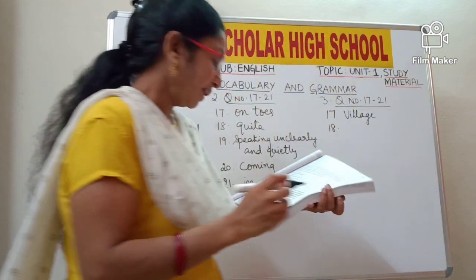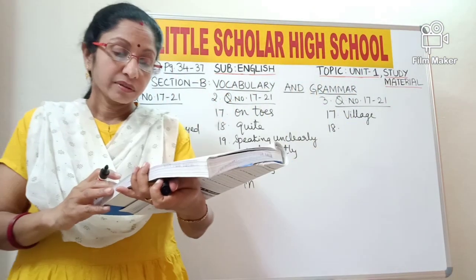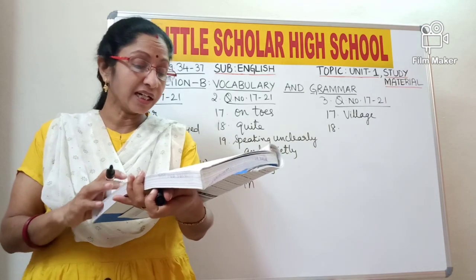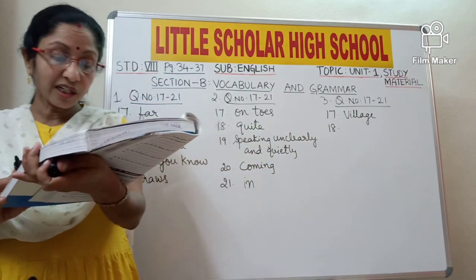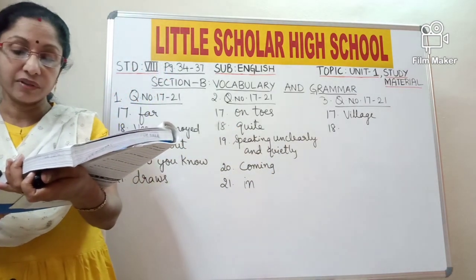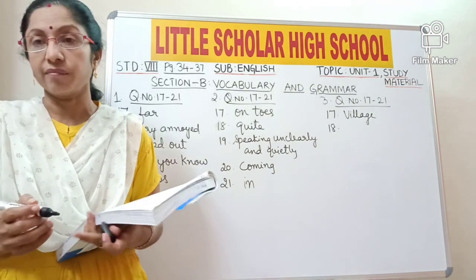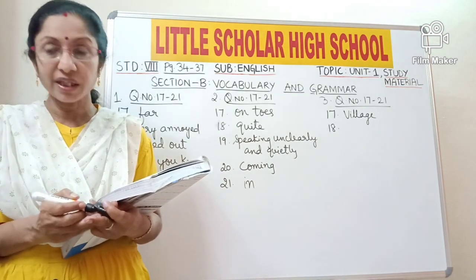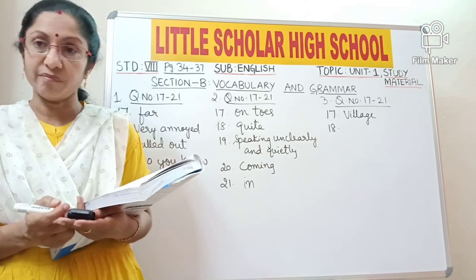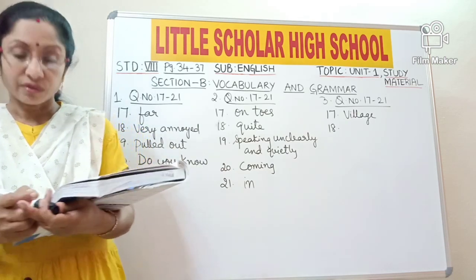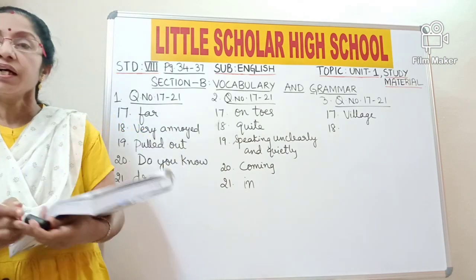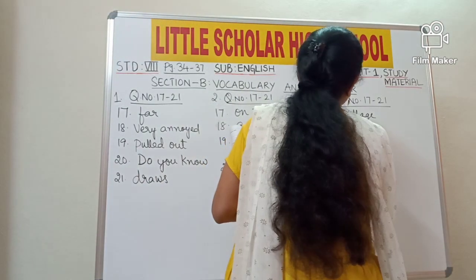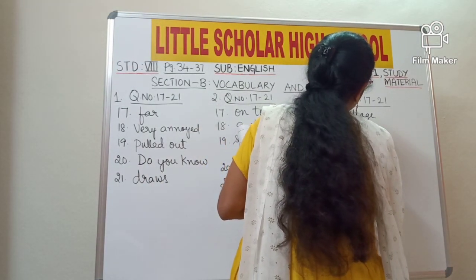Question number 18: 'futile' is underlined — futile attempt. Write the synonym of the underlined word 'futile'. A synonym is a word which has similar or almost the same meaning. The synonym of 'futile' is 'unsuccessful'.